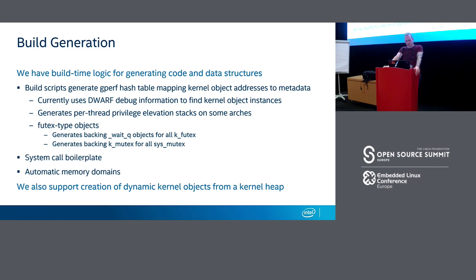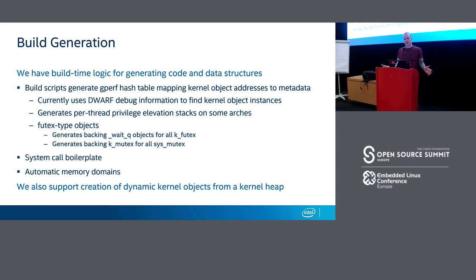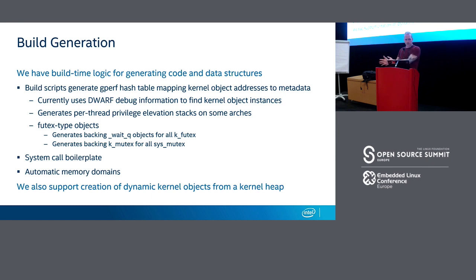Beyond the kernel object pointer table, there are additional data structures generated at build time. On ARM, we generate stack buffers for privilege elevation. For futex-type objects, we generate the wait queues or priority-inheriting mutexes that back them. For system calls, we've made defining new system calls fairly simple — all the boilerplate code is handled by the build system. For memory domains, we have a system for routing global data structures into their own memory partitions, making them contiguous and appropriately sized and aligned for the memory protection hardware.